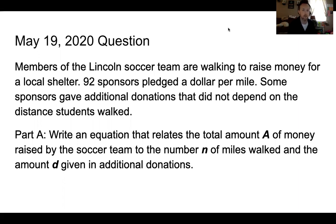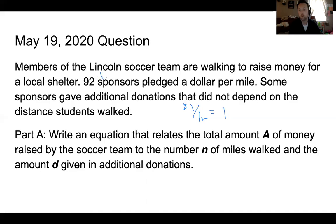So today's question — last time you were asked to write an equation. It said: members of the Lincoln soccer team are walking to raise money for a local shelter. Ninety-two sponsors pledged $1 per mile. So that $1 per one mile equals out to one, so we know that it's 92 times one, or just 92. Some sponsors gave additional donations that didn't depend on the distance. So we're asked to write an equation for the total amount of money raised, which we're going to represent by the variable A, by the number of N miles walked and the amount D given in additional donations.